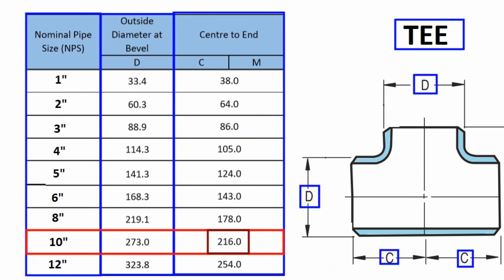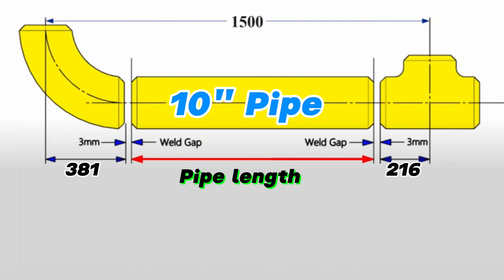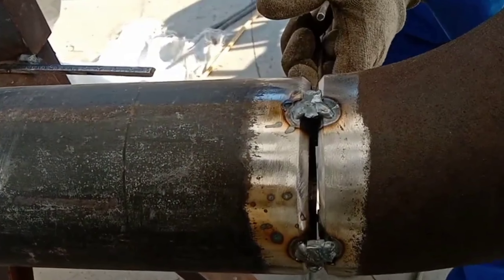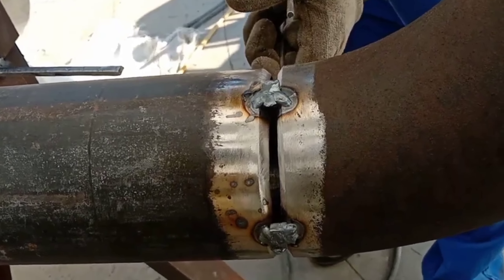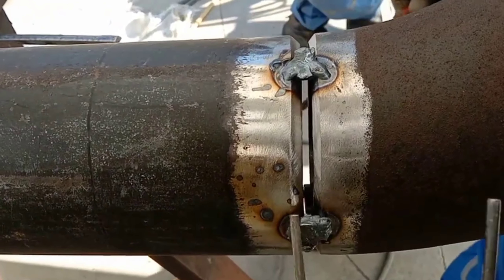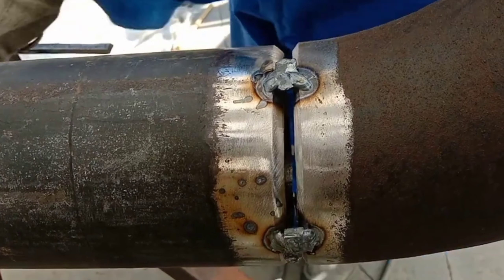Now let's go back to our main video. We have now learned the lengths of the 10-inch 90-degree butt weld elbow and equal tee. Also, during fit-up between pipe fittings there should be a gap of approximately 3 millimeters for welding. You can see this gap for welding as a practical example in this video. During fit-up, a gap of approximately 3–4 millimeters is left between the pipe fittings to be welded, and having this gap is for better root welding.